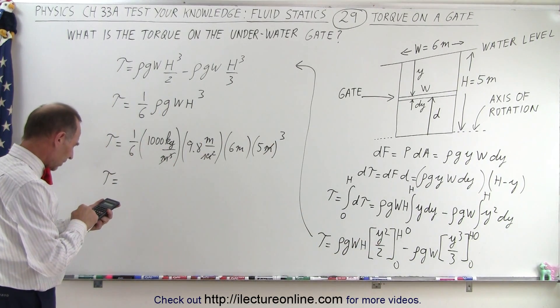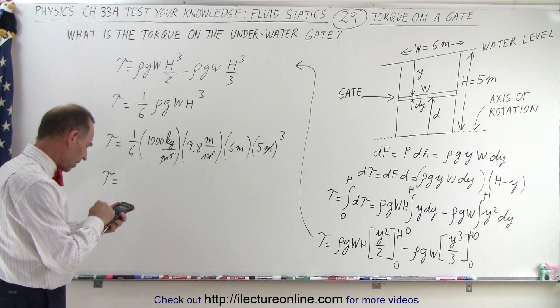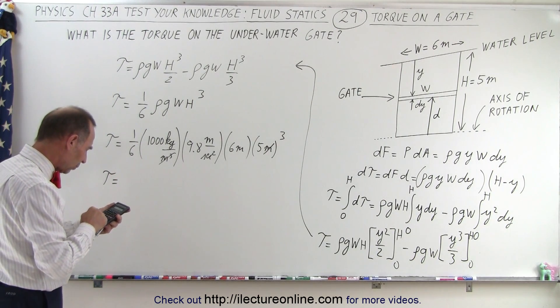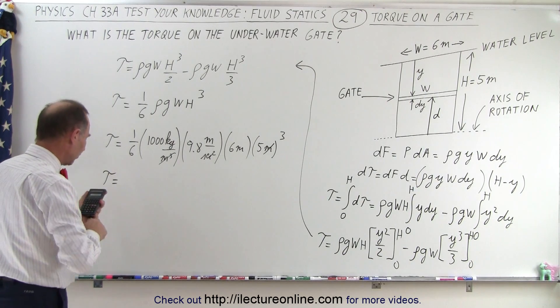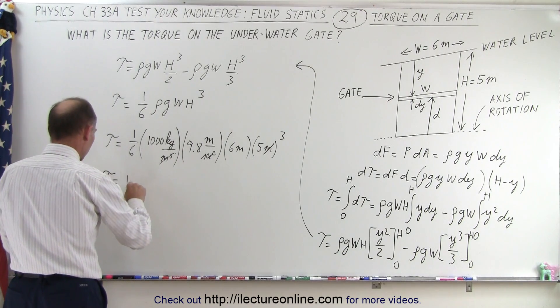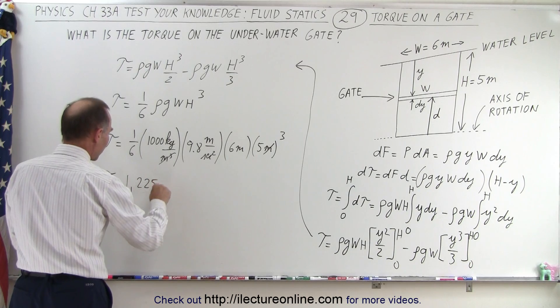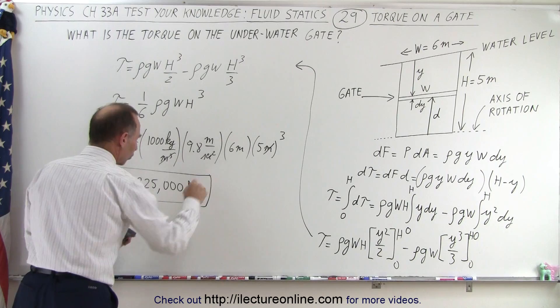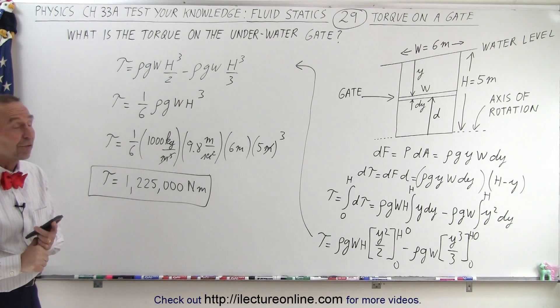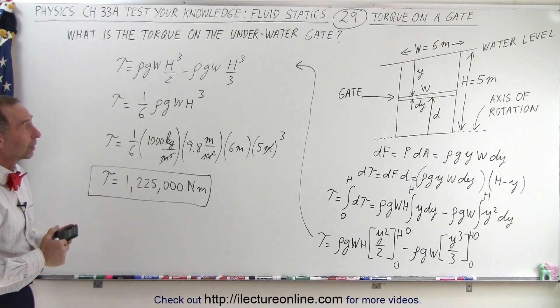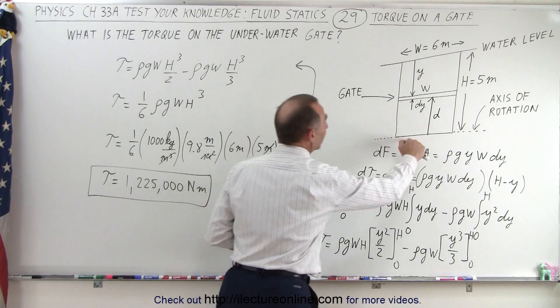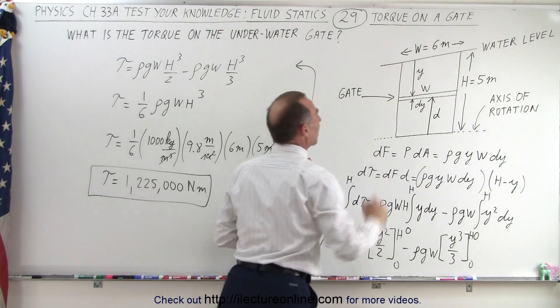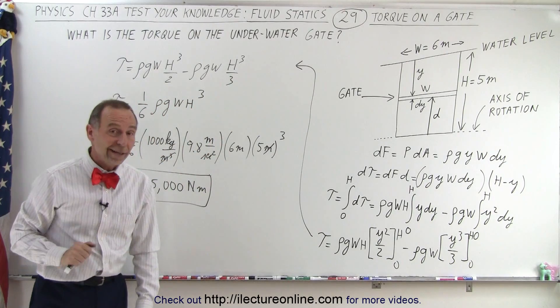So torque is equal to, we have one thousand times nine point eight, six divided by six cancels out times 125, that gives us one million two hundred and twenty five thousand Newton meters which is the proper units for torque. And that is how we find the torque on an underwater gate that is hinged at the bottom and has the water pushing against it all the way from the bottom to the top of the gate and that is how that's done.